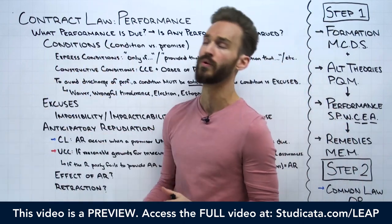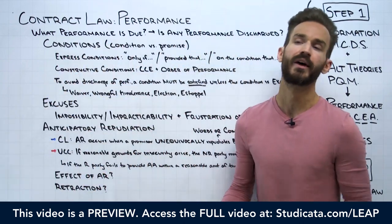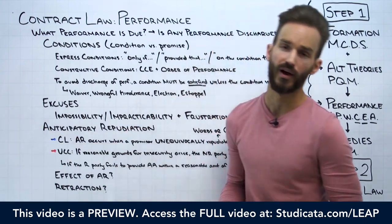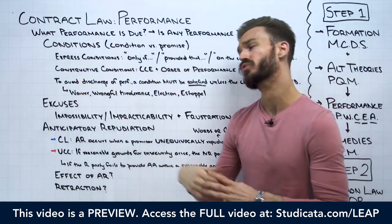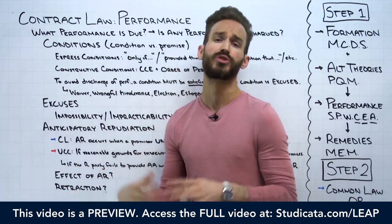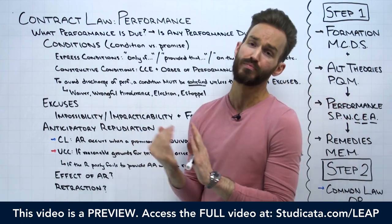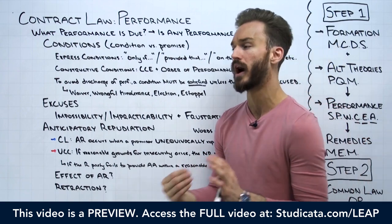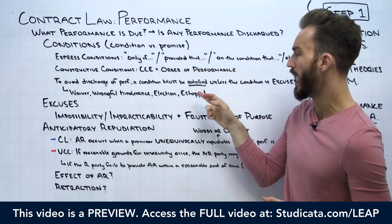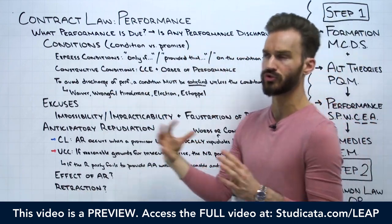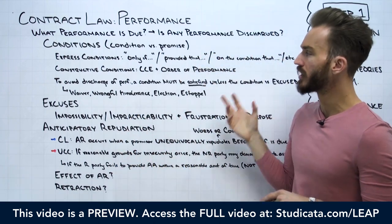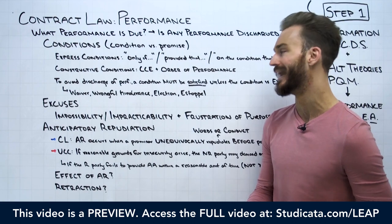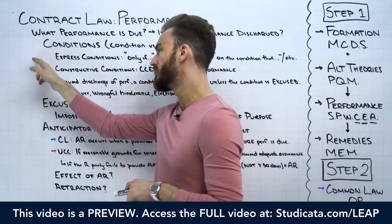For example, if you pay an auto technician $500 to replace your bumper on the condition that you're satisfied with their work, a court is more inclined to apply the modern approach — would a reasonable person be satisfied? — because it's about functionality, not aesthetics. Otherwise, the occurrence or non-occurrence of a condition is usually pretty easy to see. It either happened or it didn't — usually pretty binary. That's what an express condition analysis looks like.